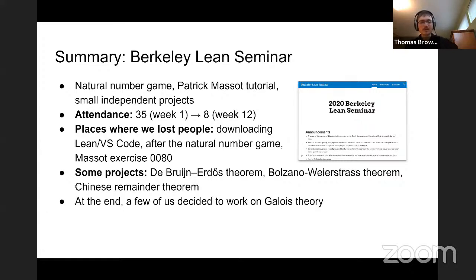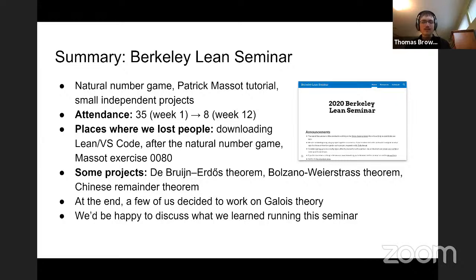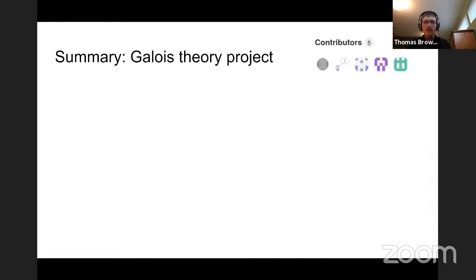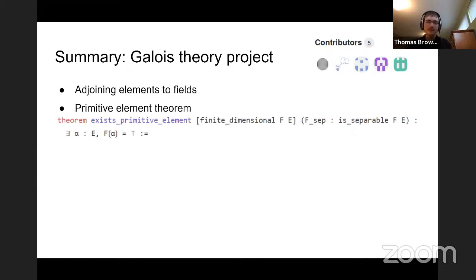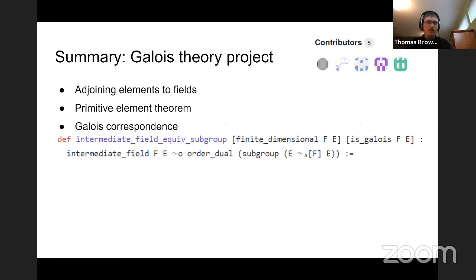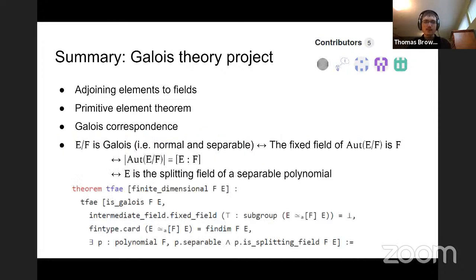After the seminar was over, a few of us decided to continue working on Galois theory. In terms of Galois theory, the first thing we did was defining adjoining elements to fields, because our first big project was proving the primitive element theorem — which states that if your field extension is finite and separable, there's a single element you can adjoin to reach the top. Following that, we proved the Galois correspondence, which is a bijection between intermediate fields and subgroups, and also proved the standard list of equivalent conditions of Galois extensions.